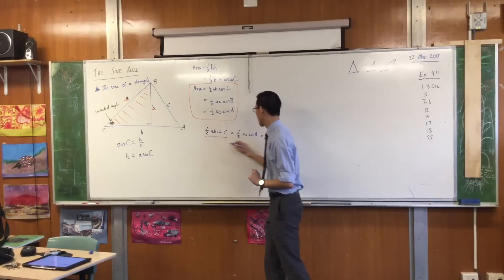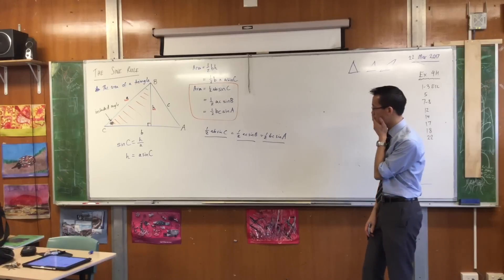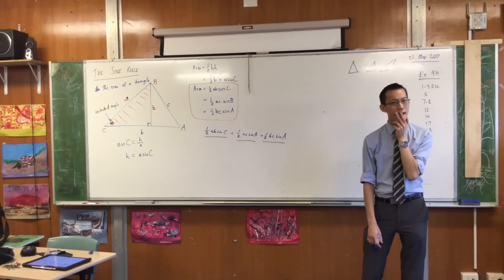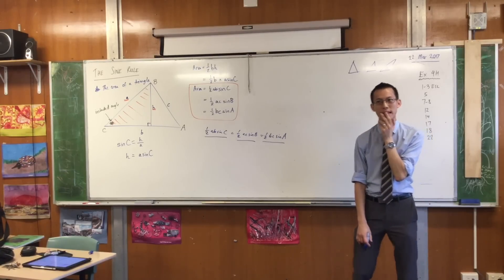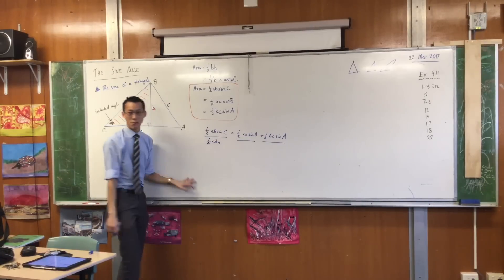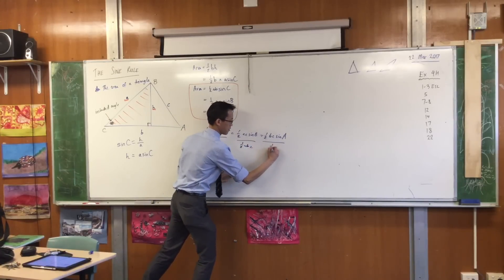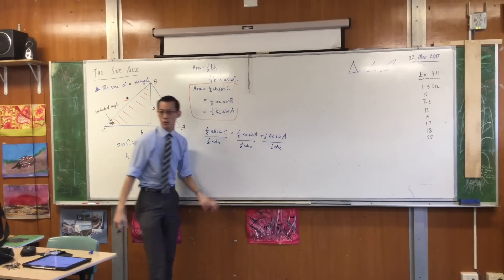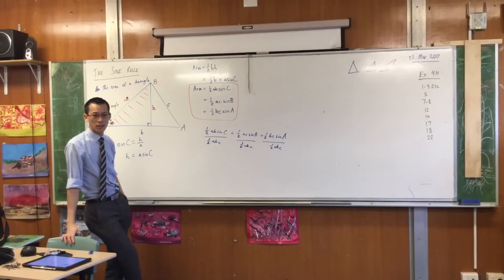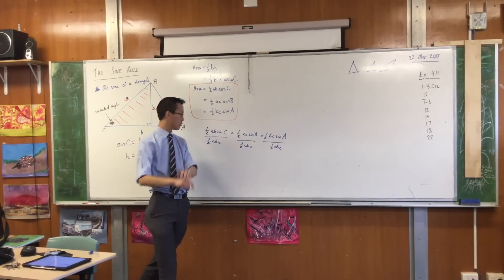I'm going to divide every single term by a half A, B, C. Can anyone see why? Watch what happens. I go a half A, B, C there, which of course means I've got to do it all the way through. What happens to all the halves? They're all gone. These halves, these halves, these halves, they all cancel with each other, so that's good.